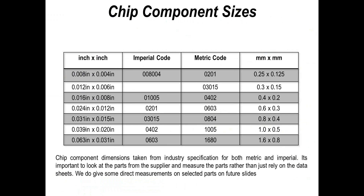Components are getting smaller and smaller. If we step back a few years, the first introduction of the next generation of small components was the 0201 — 20 thousandths of an inch by 10 thousandths of an inch. Then we got the next size down, 10 thousandths by 5 thousandths of an inch, and from that point we've moved on to smaller still. There are a lot of challenges with these components; they are more expensive, but fundamentally the processes used are pretty much the same.